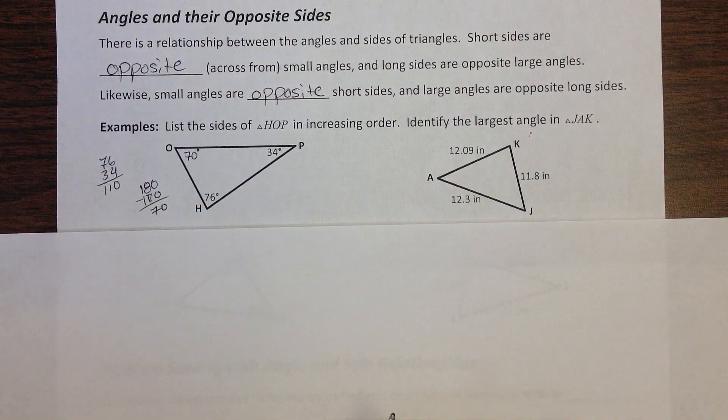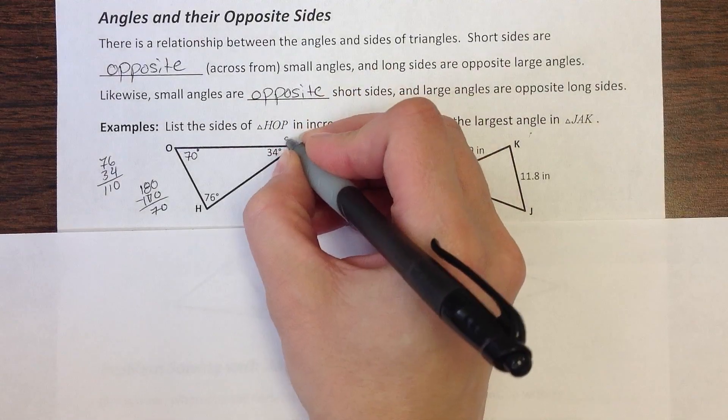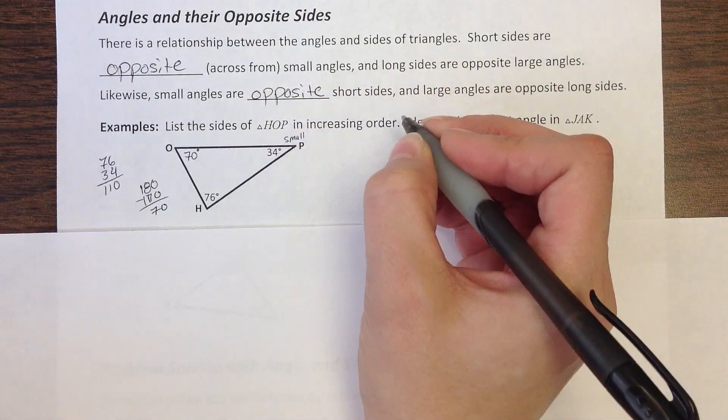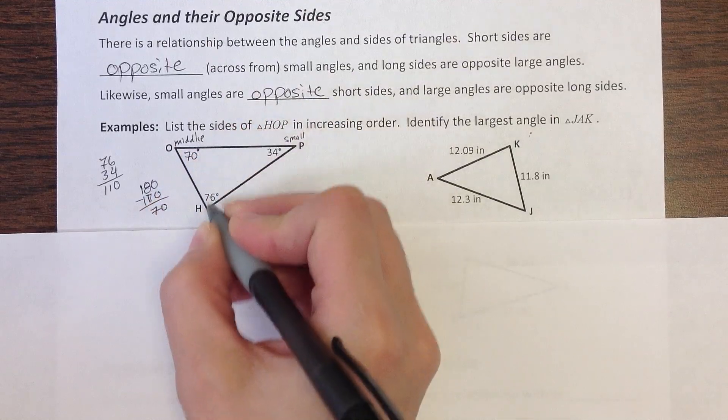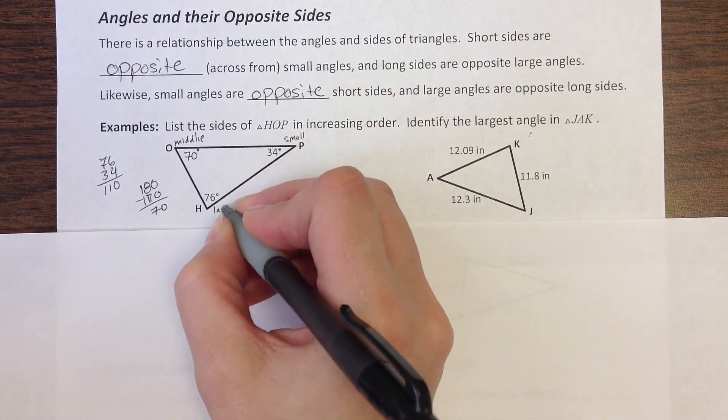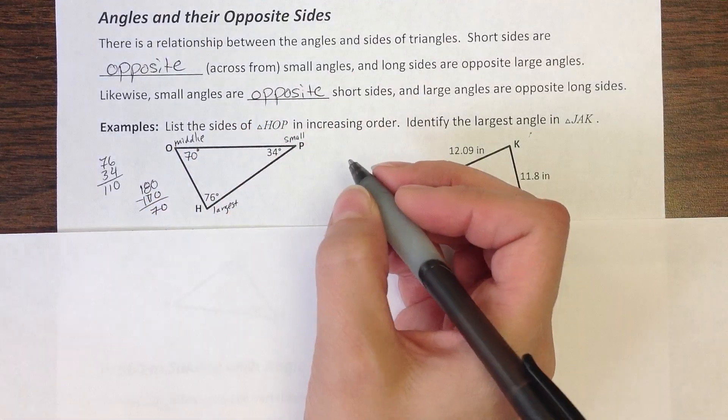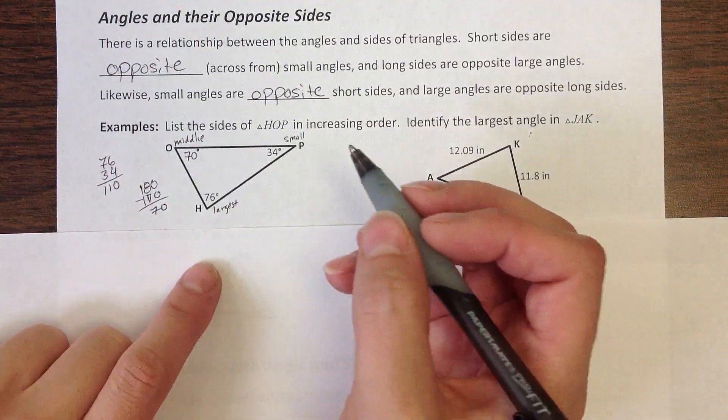Now, if I put those angles in order, I can then order their opposite sides. In other words, P was my smallest angle, O was my middle angle, and H was my largest angle. So if I go to all the opposite sides from those angles, I'll have my answer.